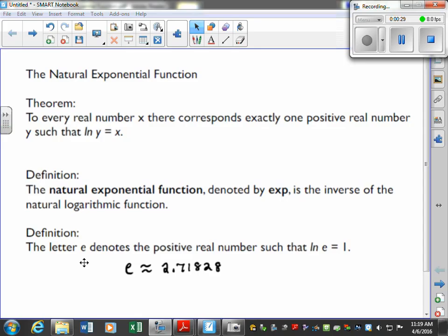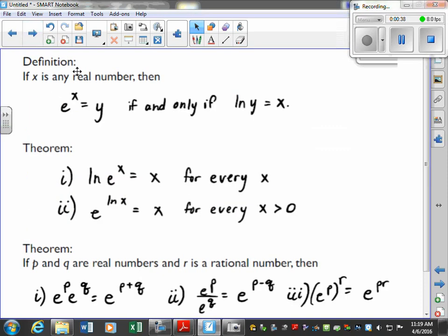Also, the letter e denotes the positive real number which has the approximate value 2.71828. And e to the x is equal to y if and only if the natural log of y is equal to x.